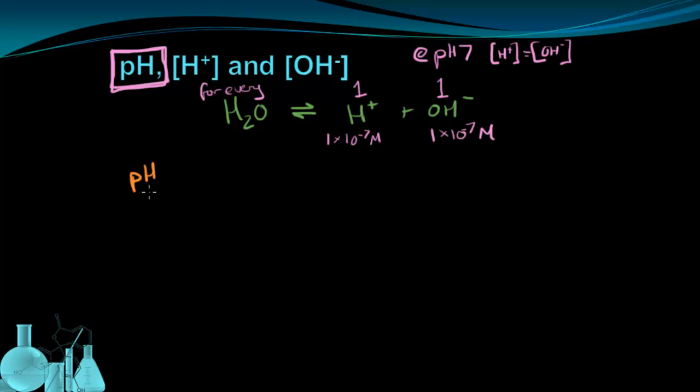We'll have a table. We'll look at pH, and we'll look at the H+ concentration and the OH- concentration. So we just said that at pH 7, I have a concentration of 1 times 10 to the negative 7th molar. I'm going to leave out the molar for space here.